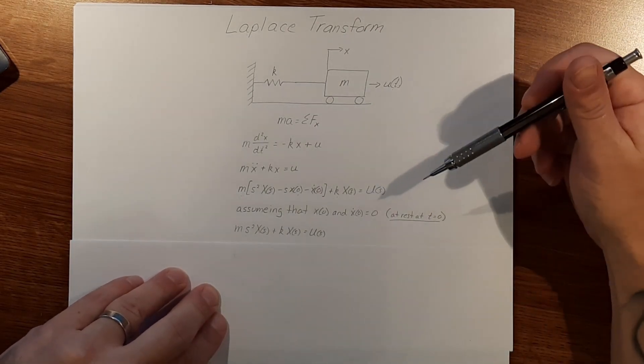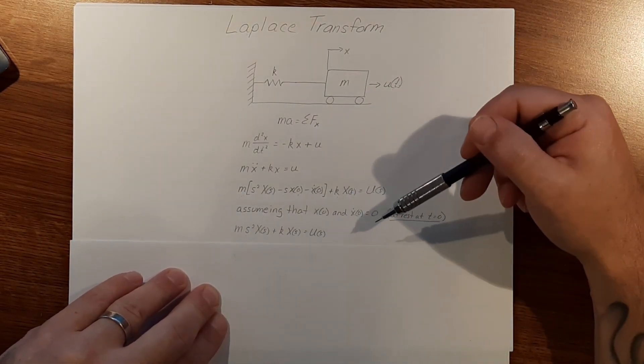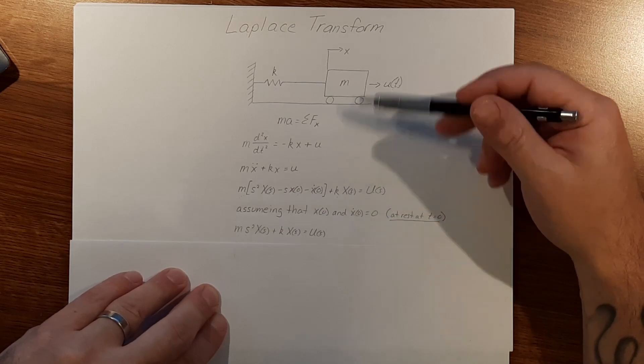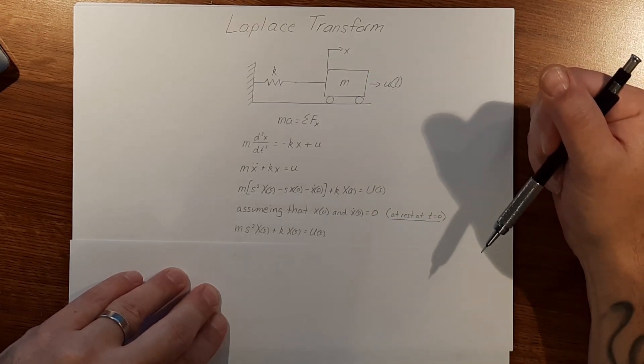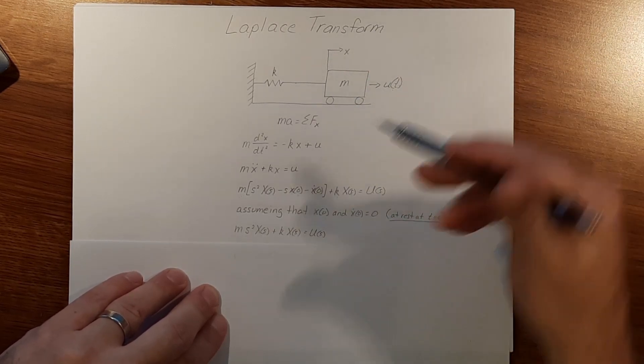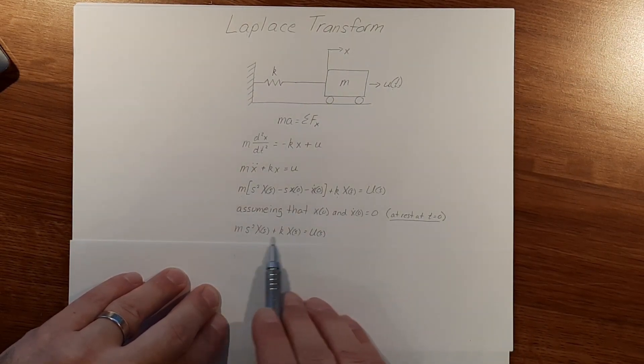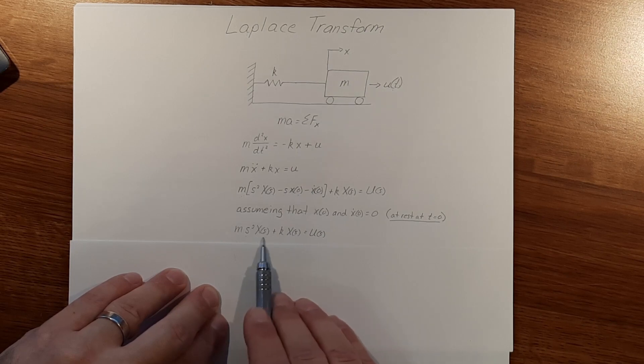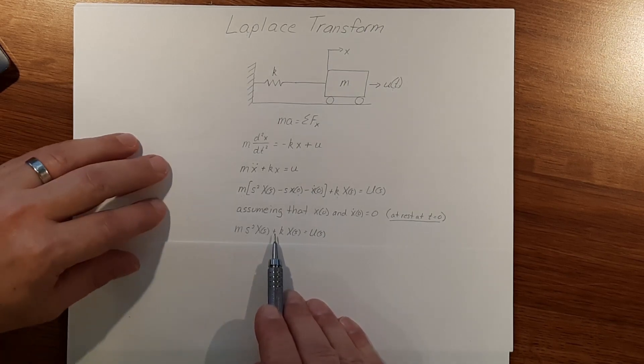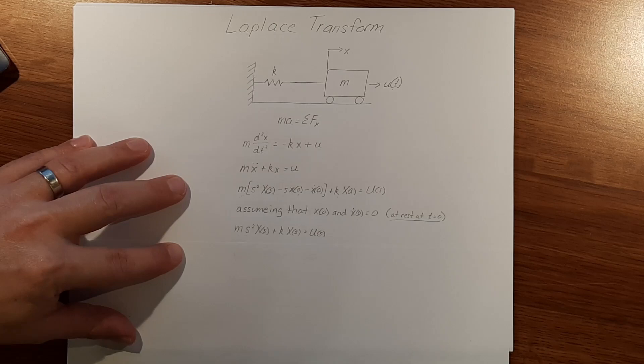Now what we're wanting to do is get an equation to solve for the change in position. We need to isolate our big X of s. That's going to give us our change in position for the time, or s in this term.